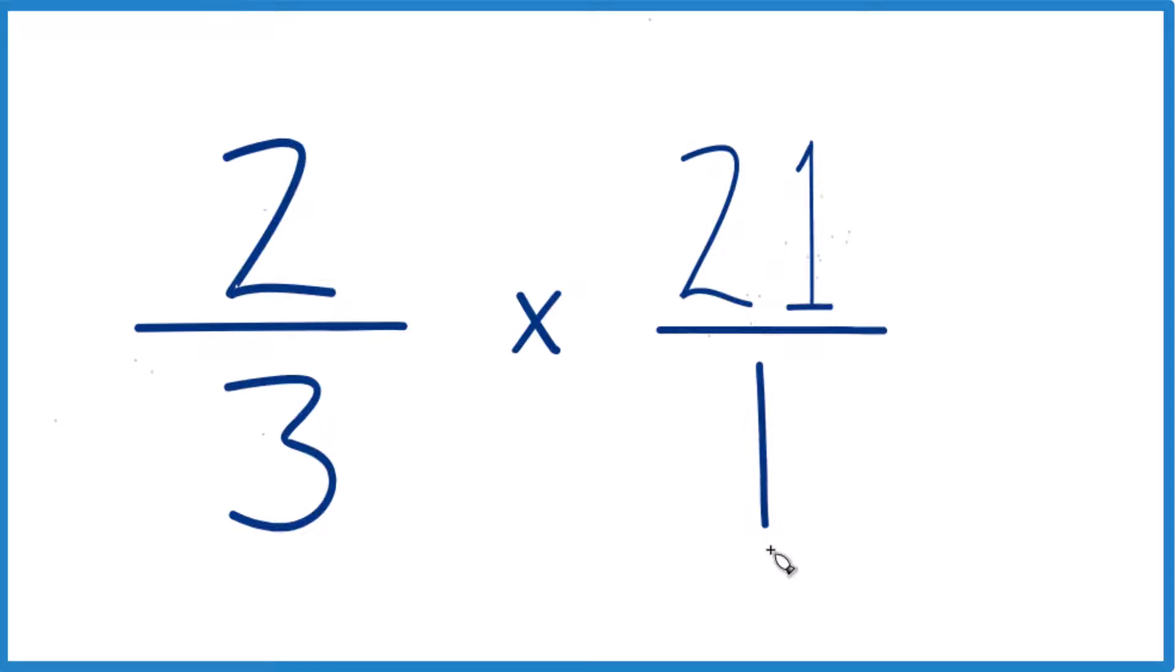21 divided by 1, that's still 21, but now everything lines up pretty nice. Next, when we have fractions, we're multiplying fractions like two-thirds times 21 over 1 here.